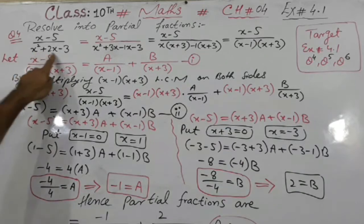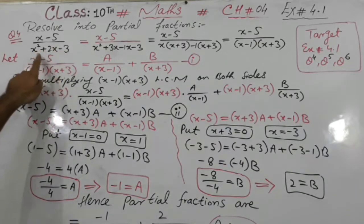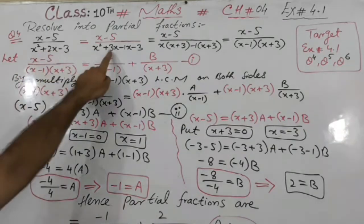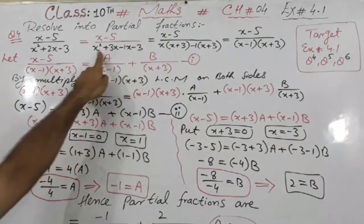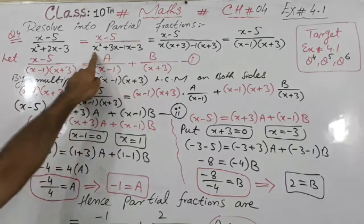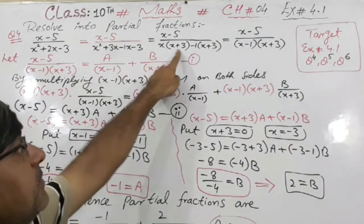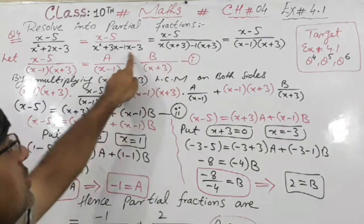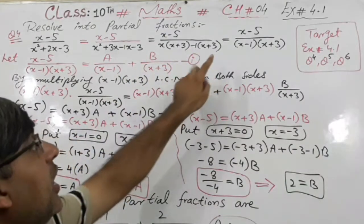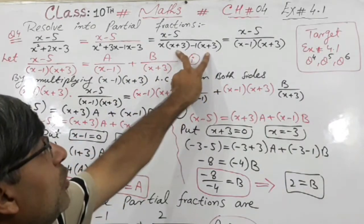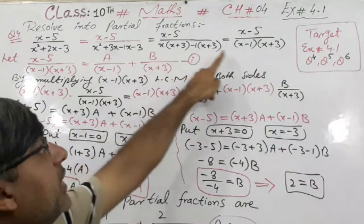We need to read this first. We will read the table: three ones are three, plus 3x minus 1x minus 3. Students, we have four values. First two: 3 common — first two we have x plus 3, bracket close, minus 1 common. Then x plus 3 is common. Now x plus 3 appears two times: one time it is taken common and the rest will be x minus 1.